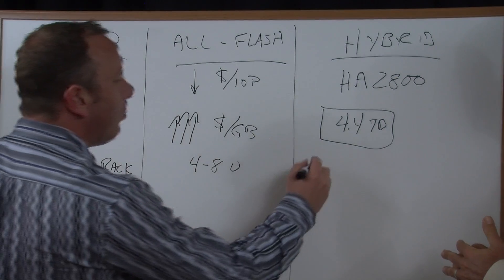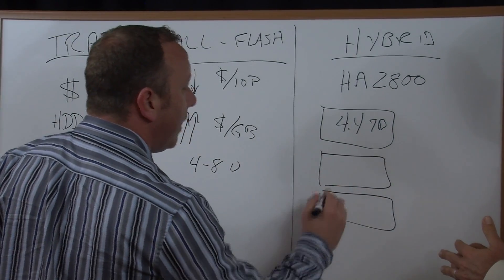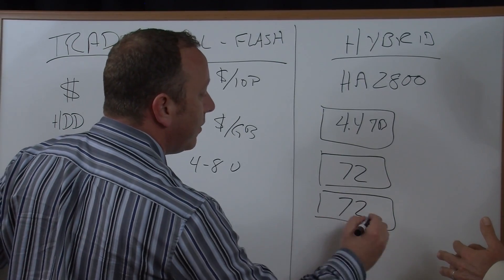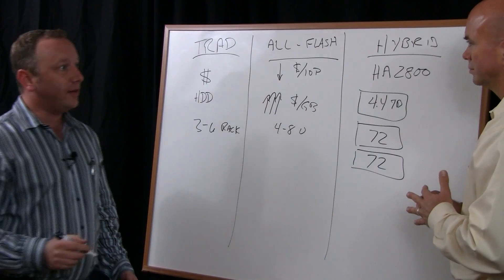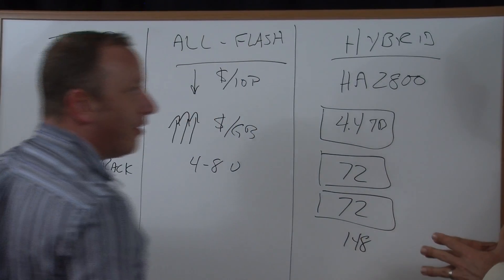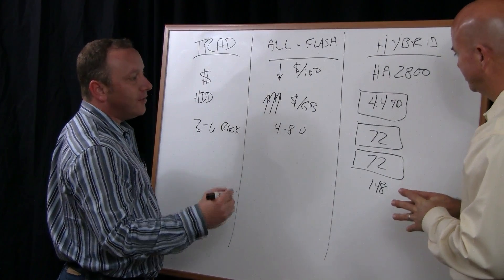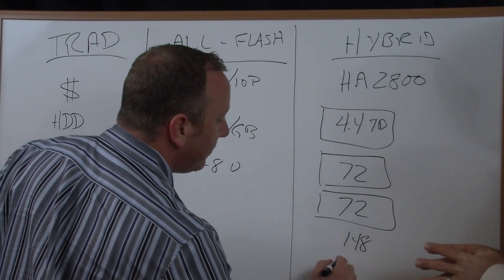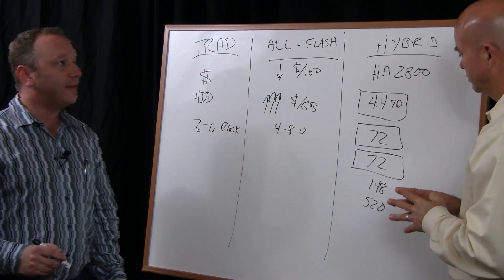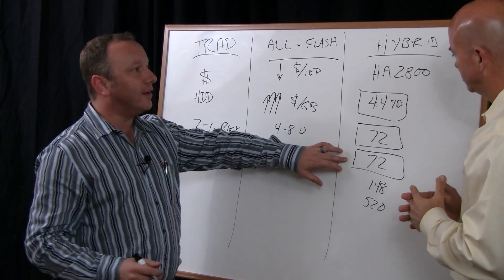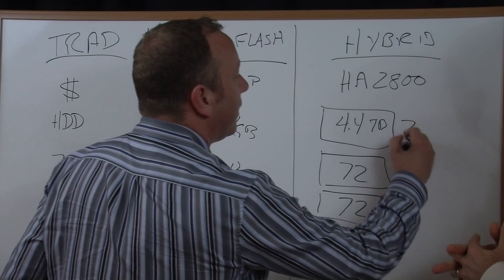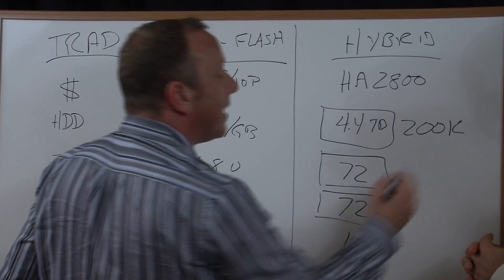But the hybrid twist that we add in there is you can chain two systems or two boxes of 72 terabytes each. So that yields about 148 terabytes. And then after dedupe and compression, it comes out to just about 520 terabytes on average.